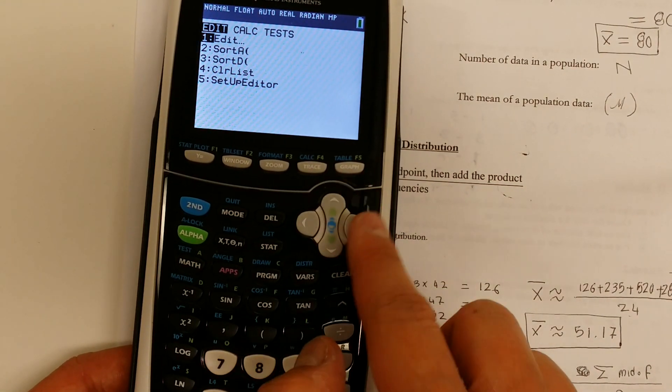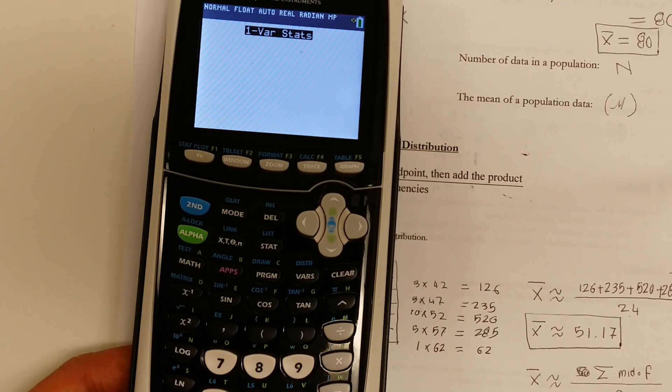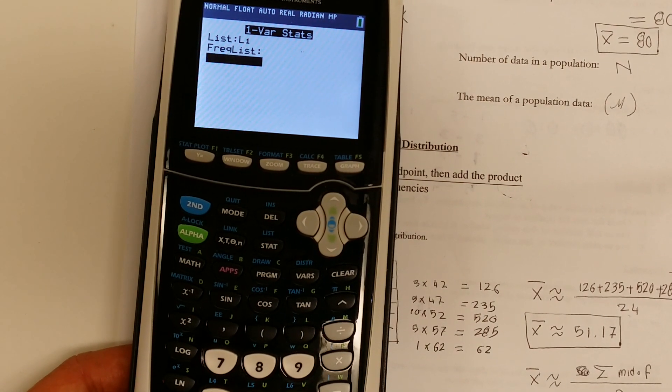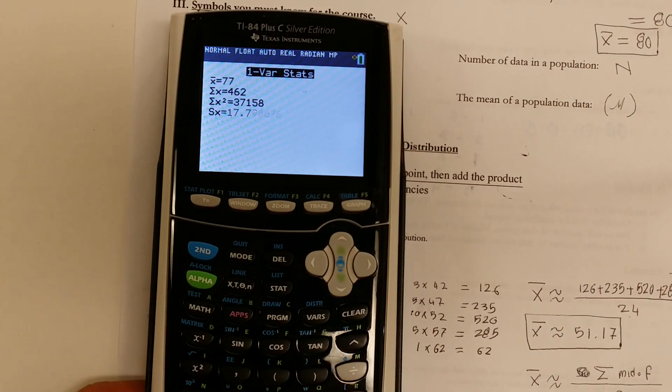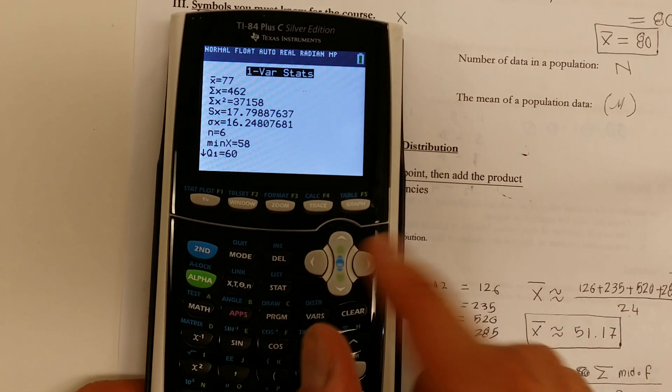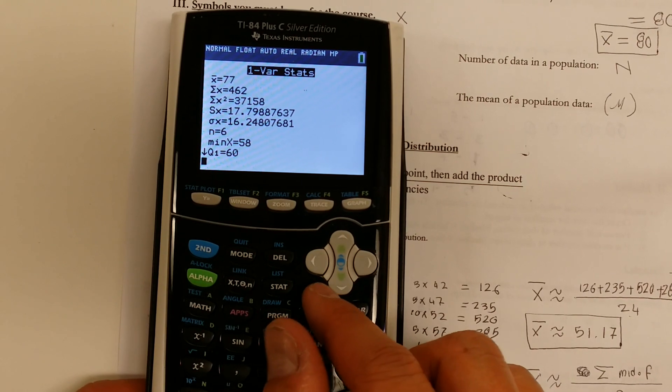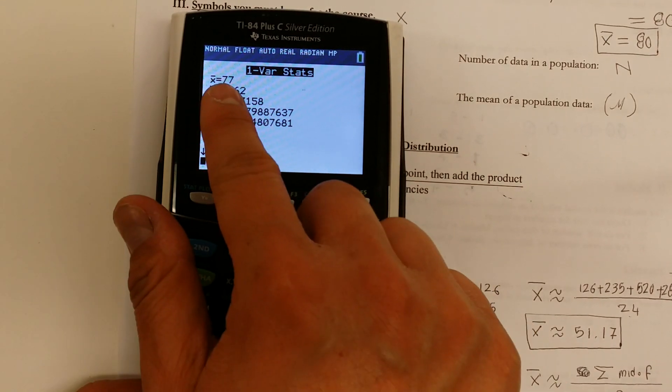So stat. Calculate. One bar. And then, remember, if you forgot the step, watch the first part of, watch the previous few minutes of this. The last few minutes before I got here and then you're going to be able to see it. But look, the average is seventy-seven.